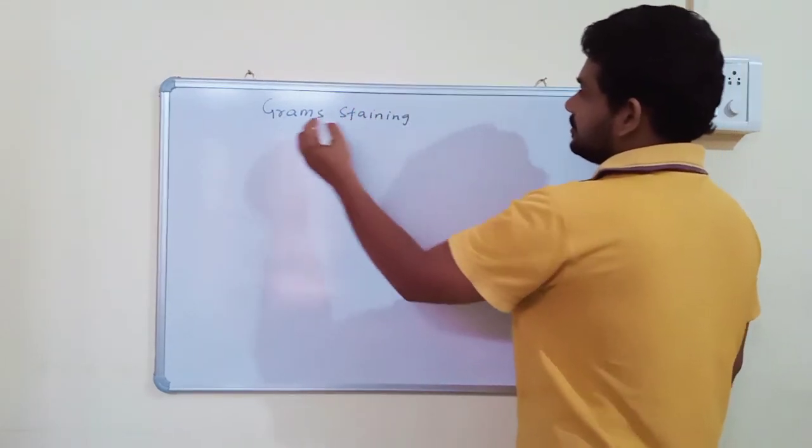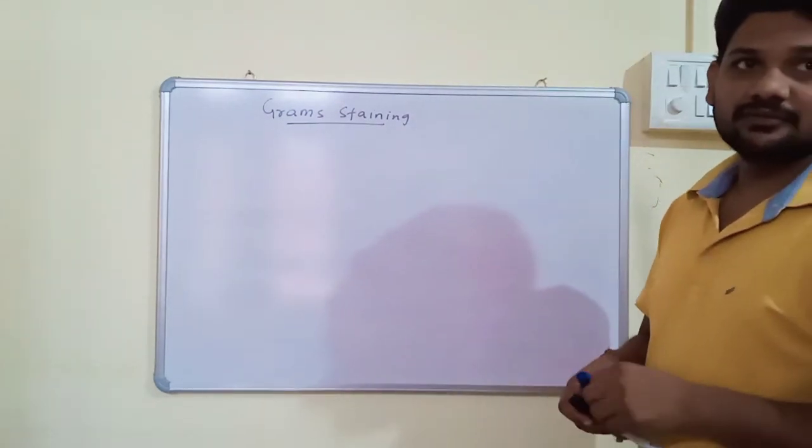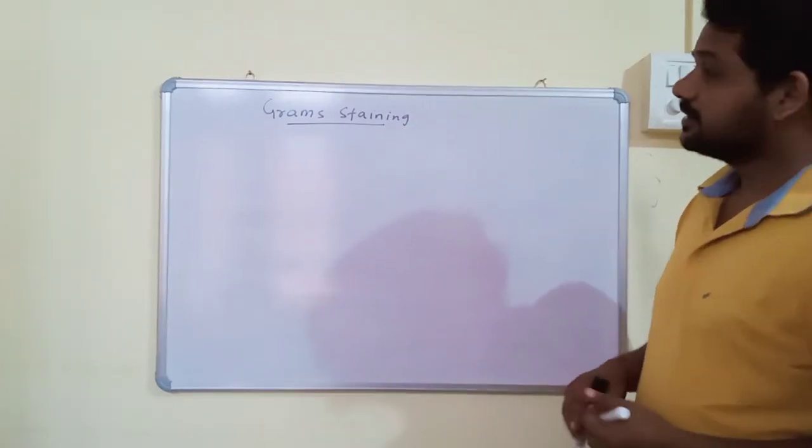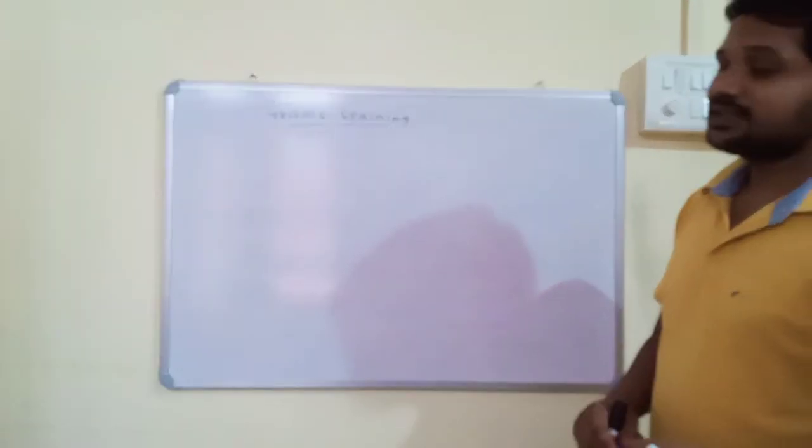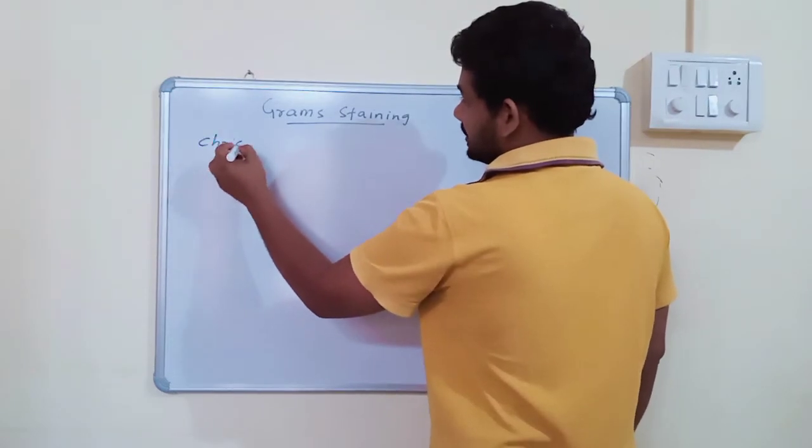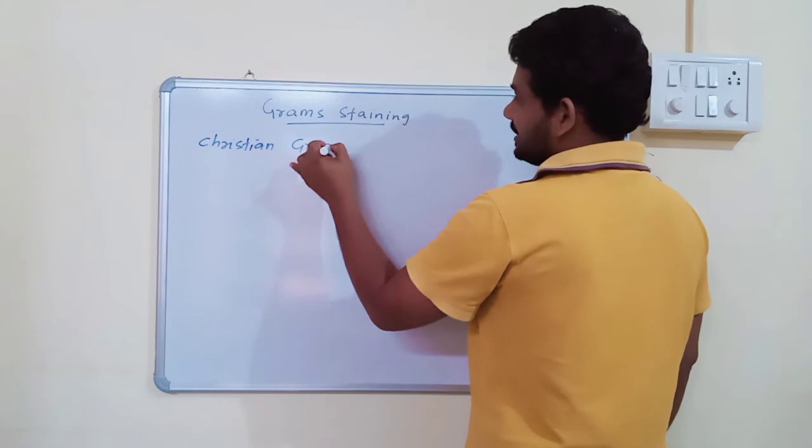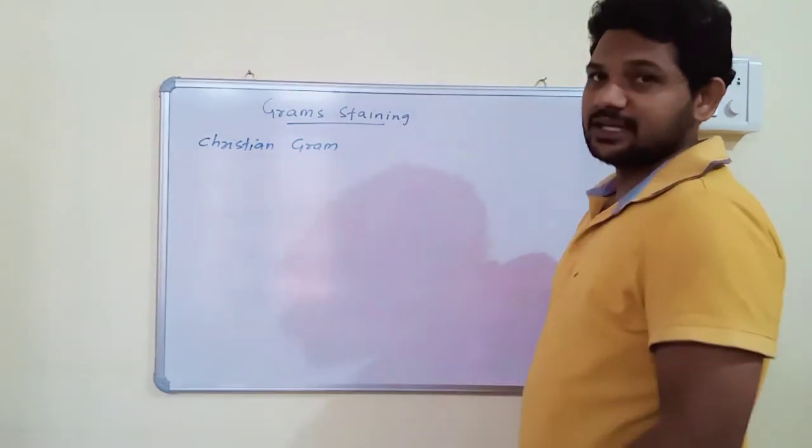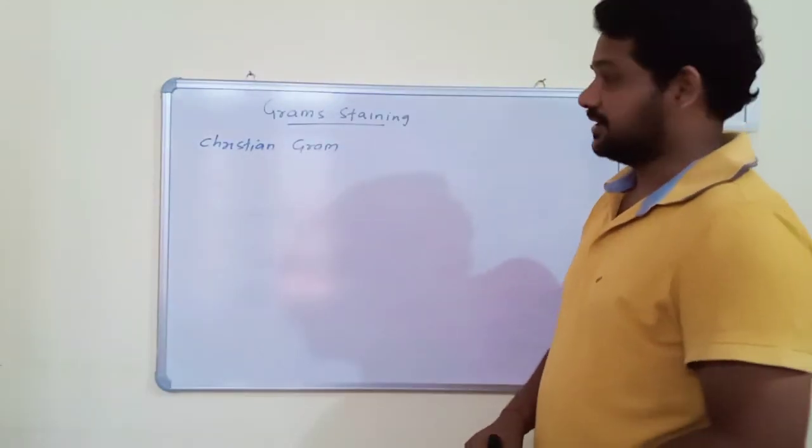Bacteria is of two types. Based on Gram staining, bacteria can be classified into two types: Gram positive and Gram negative. And how we can differentiate? This is Gram positive and this is Gram negative bacteria. Christian Gram developed a technique for staining of bacteria.